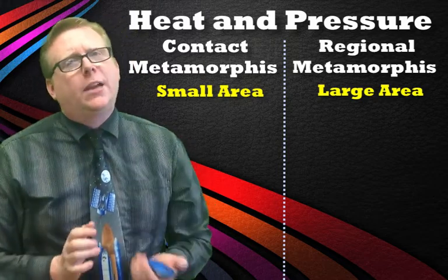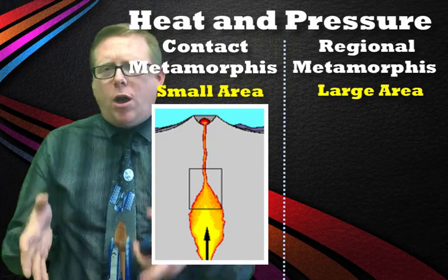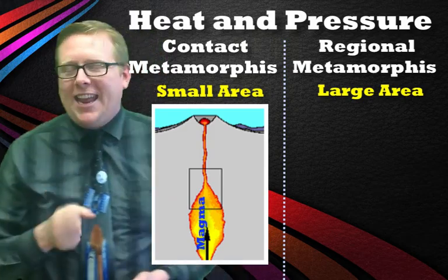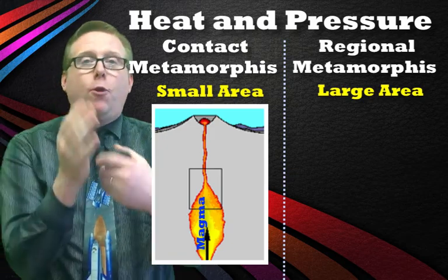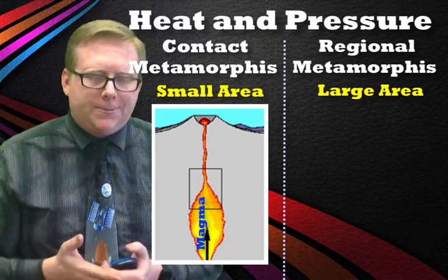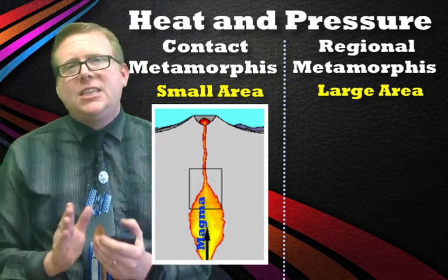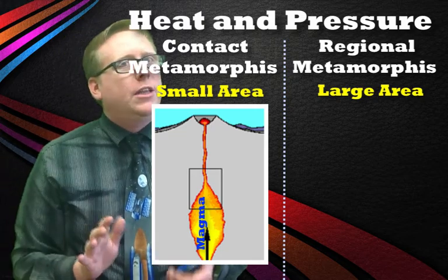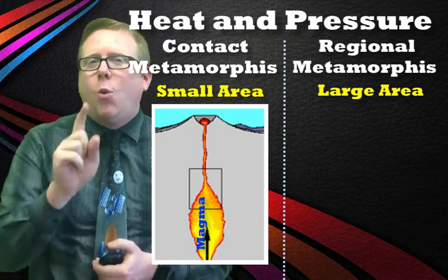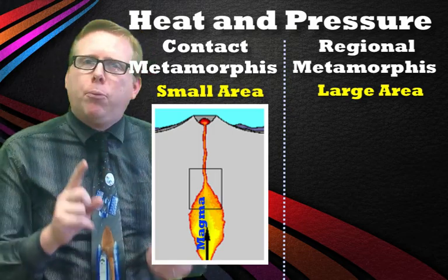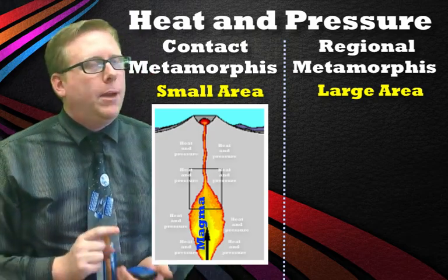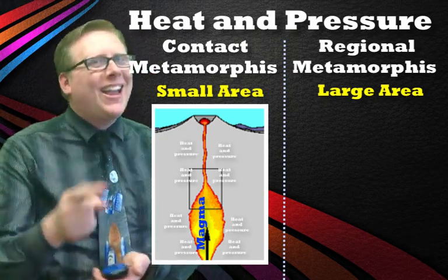Let's look at contact metamorphosis. We talked about how inside our earth is hot — that magma comes up through our planet and forms a volcano. In the process, it squeezes its way through the rocks in our lithosphere, in the crust. One of the ways to get metamorphic rock is pressure, and so magma moving up is going to create pressure.